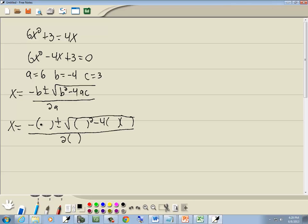Now everywhere I have a b, I'll plug in negative 4. Everywhere I have an a, I'll plug in 6. And everywhere I have a c, I'll plug in 3.